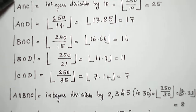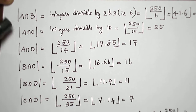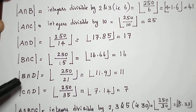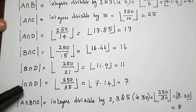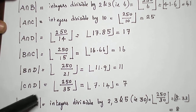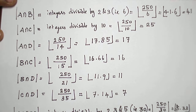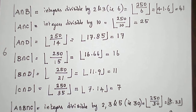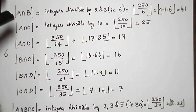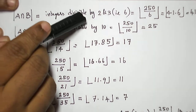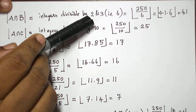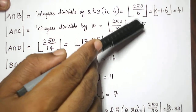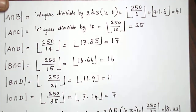Now let us find the two-element intersection sets: A∩B, A∩C, A∩D, B∩C, B∩D, and C∩D. There will be 6 such combinations for 4 sets. For A∩B — integers divisible by both 2 and 3, that is by 6 — we get floor(250/6) = 41.